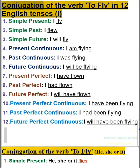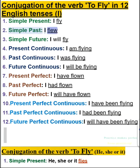Conjugation of the verb to fly in 12 English tenses. I: 1. Simple present — I fly. 2. Simple past — I flew. 3. Simple future — I will fly.